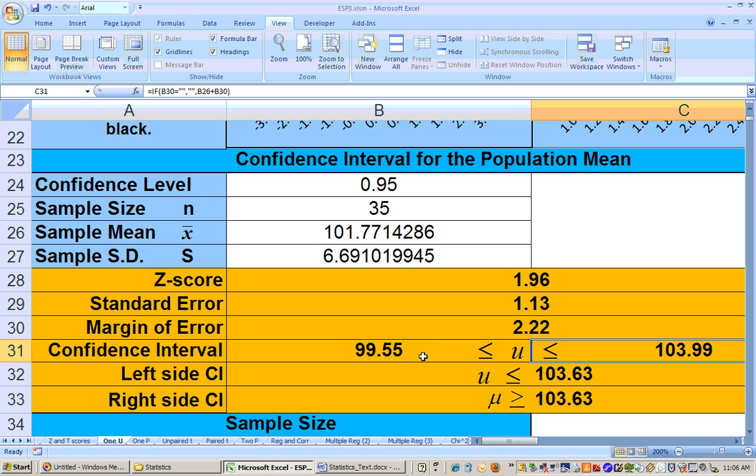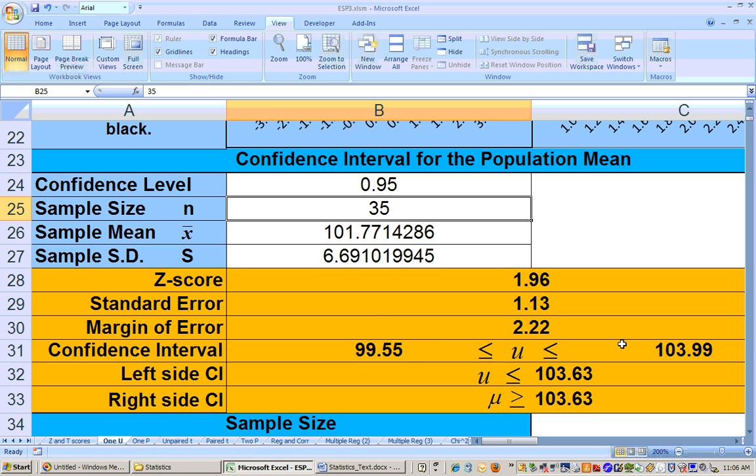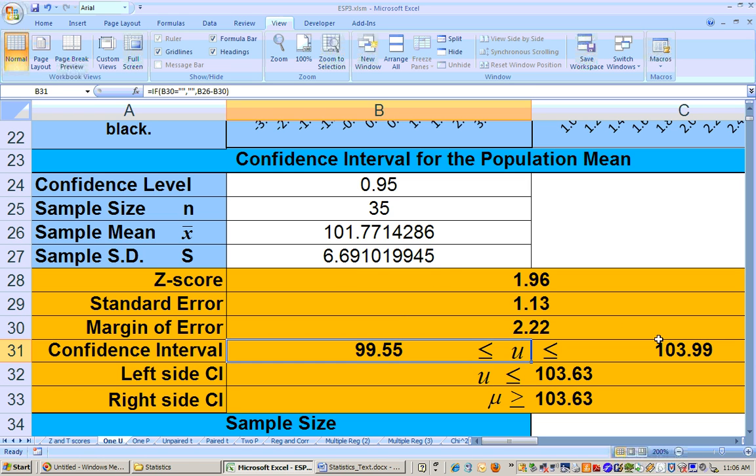Now it's a summary about the entire population. Some people will choose, if it's multiple choice, the one that says I'm 95% sure that the average cost of the 35 flights is between these two. But that would be wrong. We're actually 100% sure that the average cost of these 35 flights is $101.77. But I'm 95% sure that the average cost for all the flights from Atlanta to Chicago is somewhere between $99.55 to $103.99.